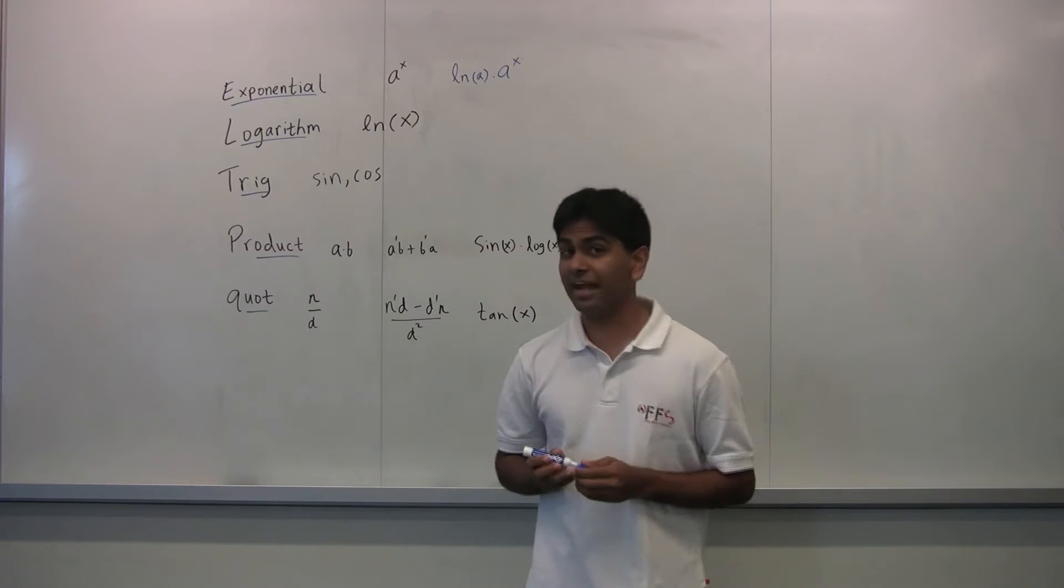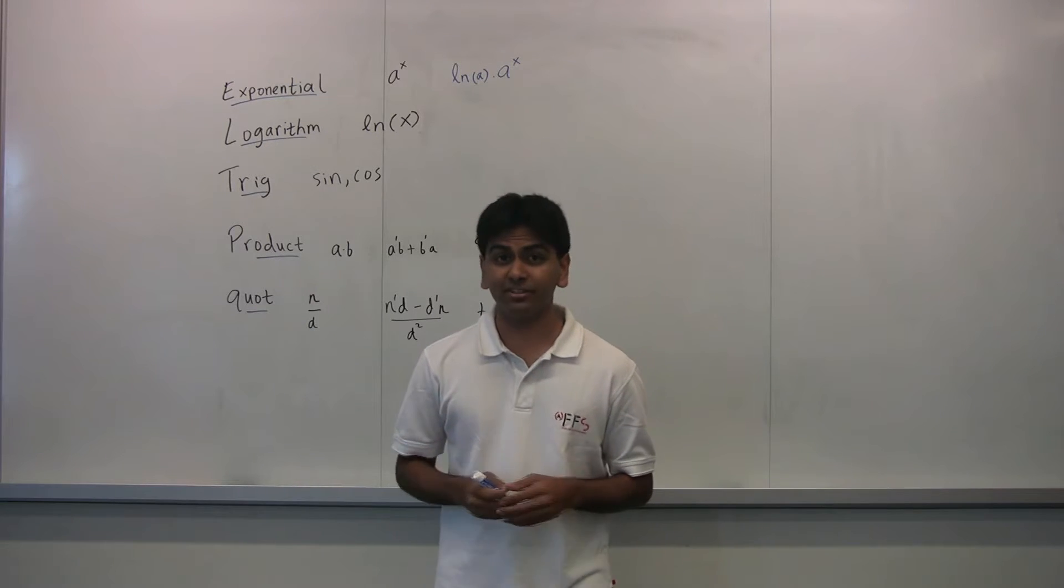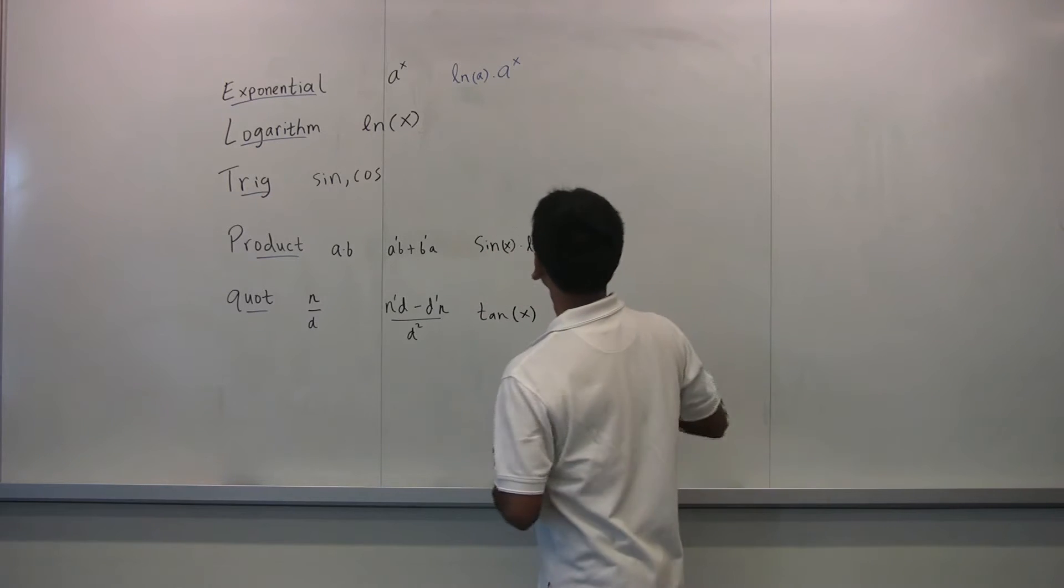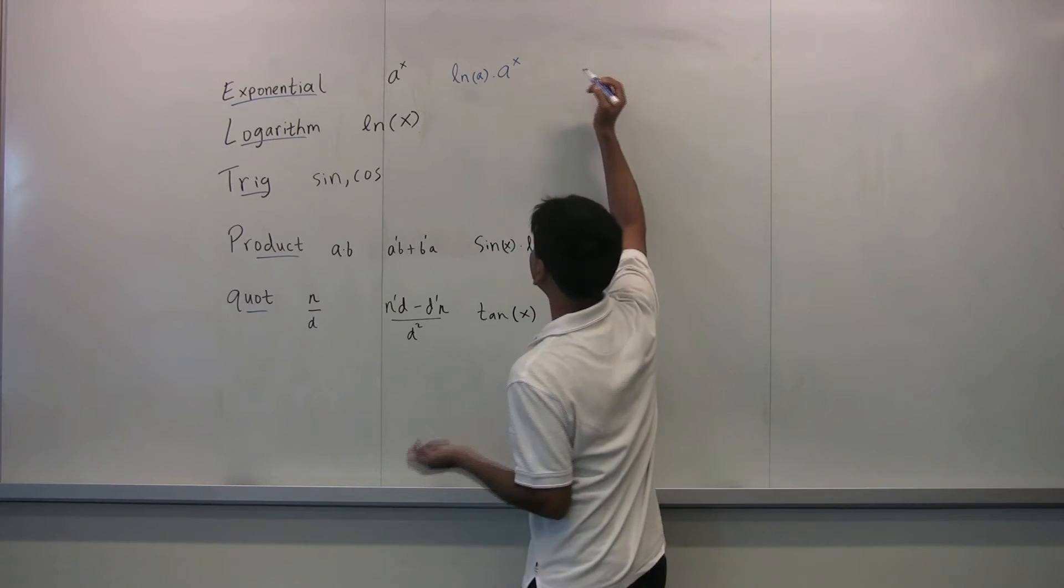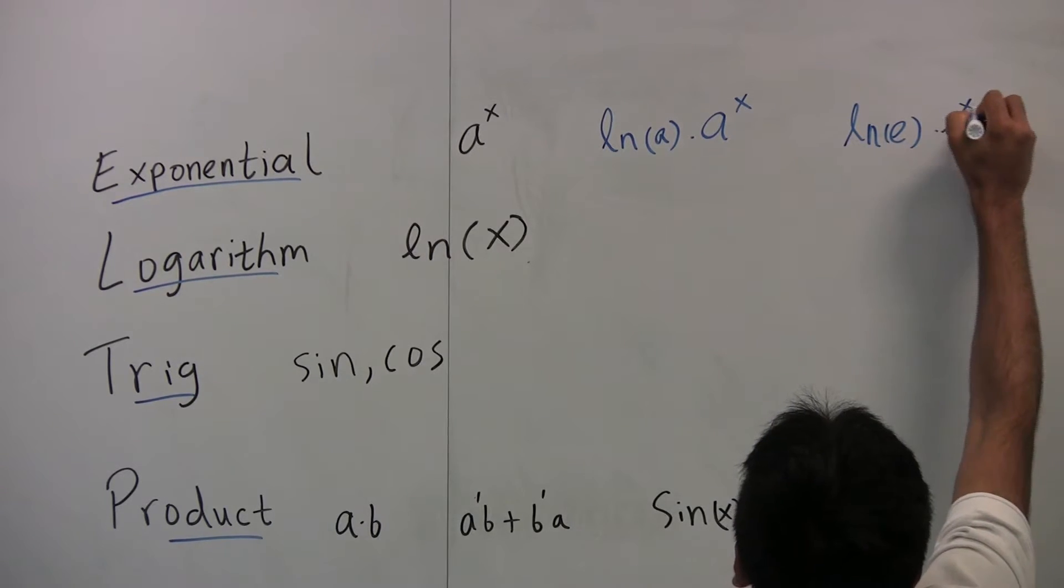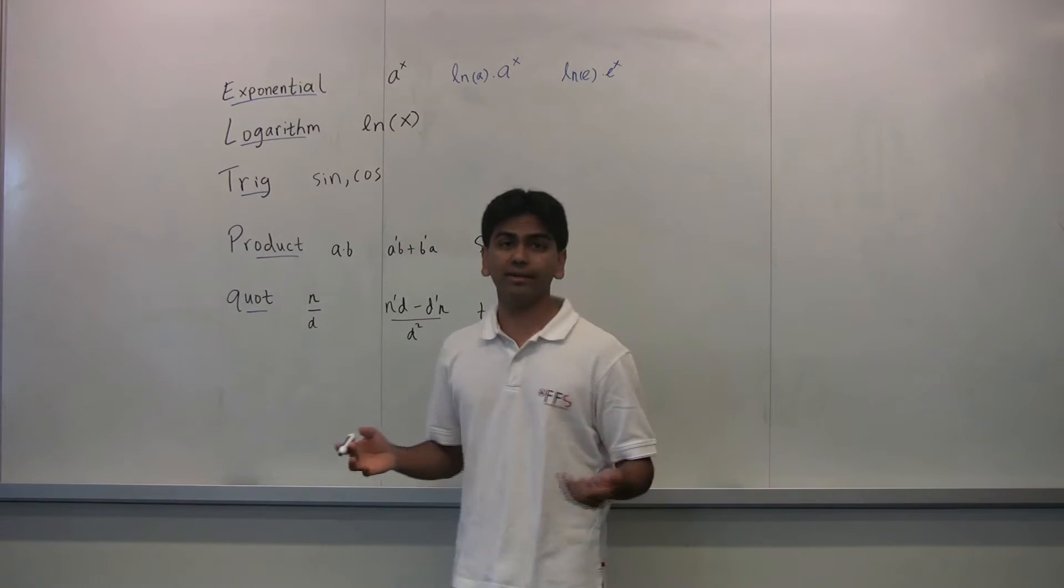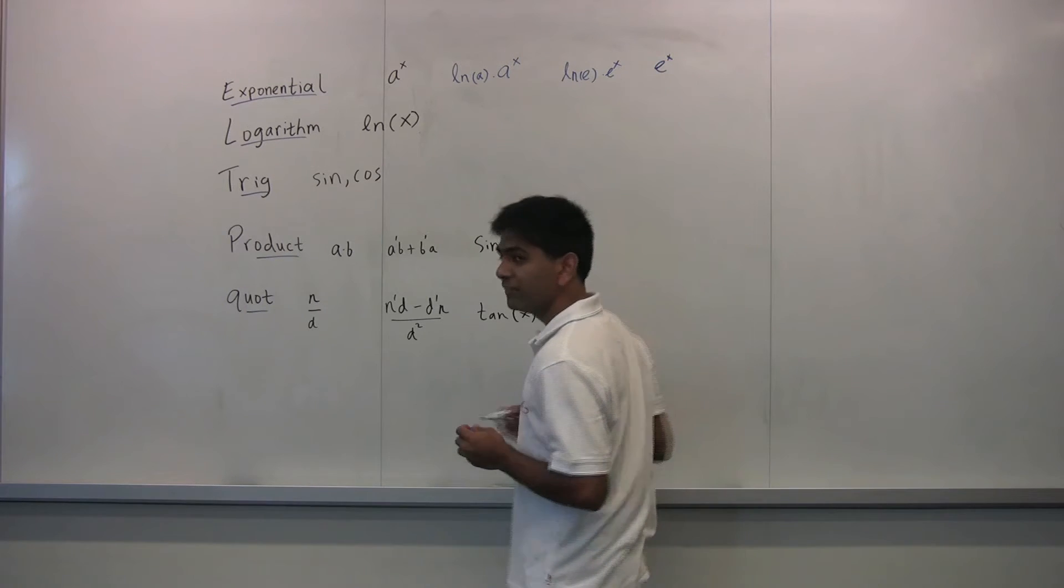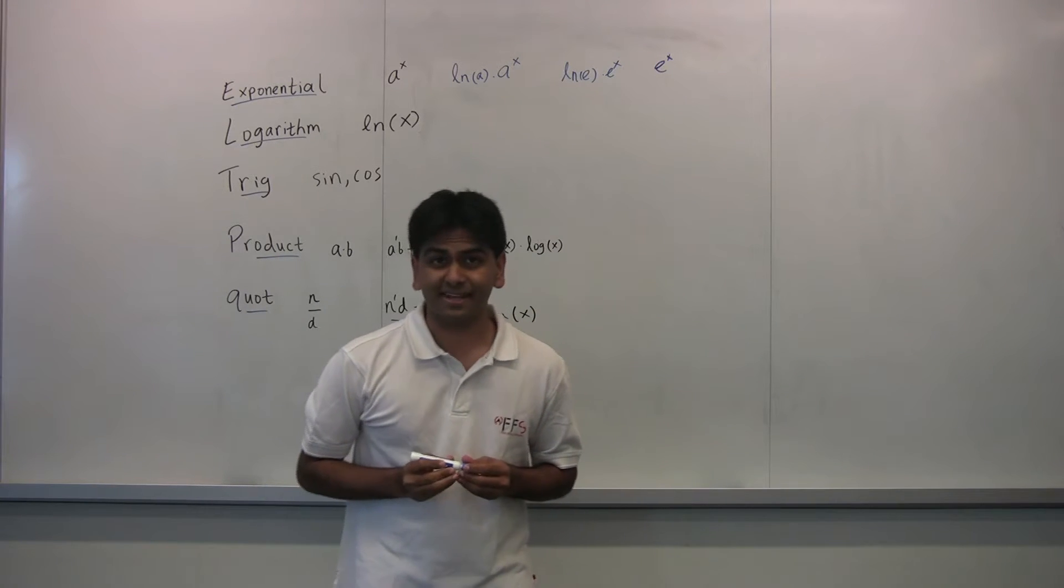So the derivative of 5 to the x is ln of 5 times 5 to the x. The derivative of e to the x, since e is a number, is ln of e times e to the x. Now, since ln of e happens to be 1, this is just e to the x. So the derivative of e to the x is e to the x.